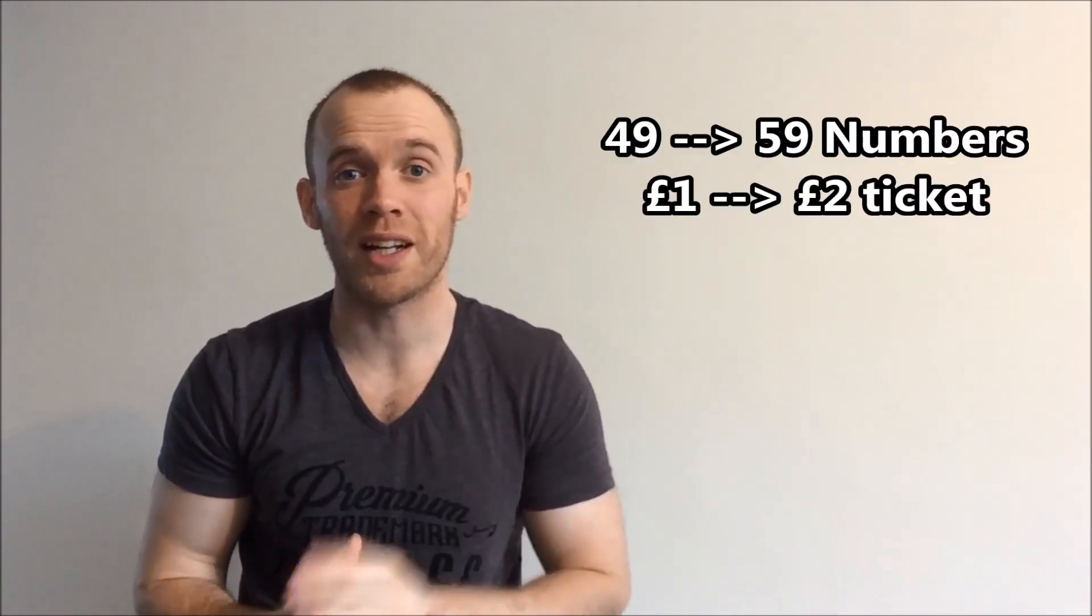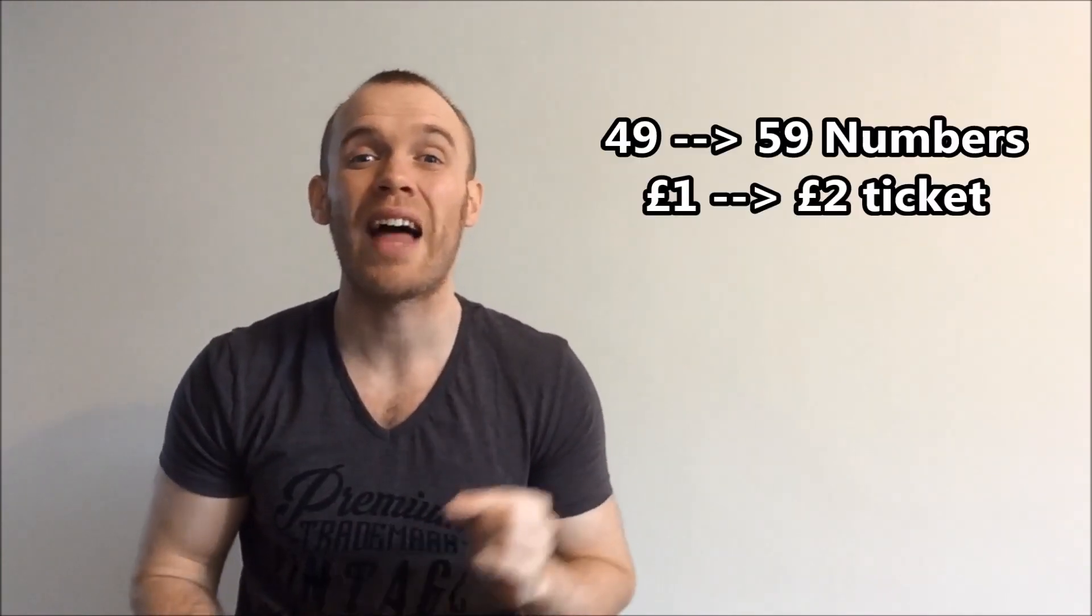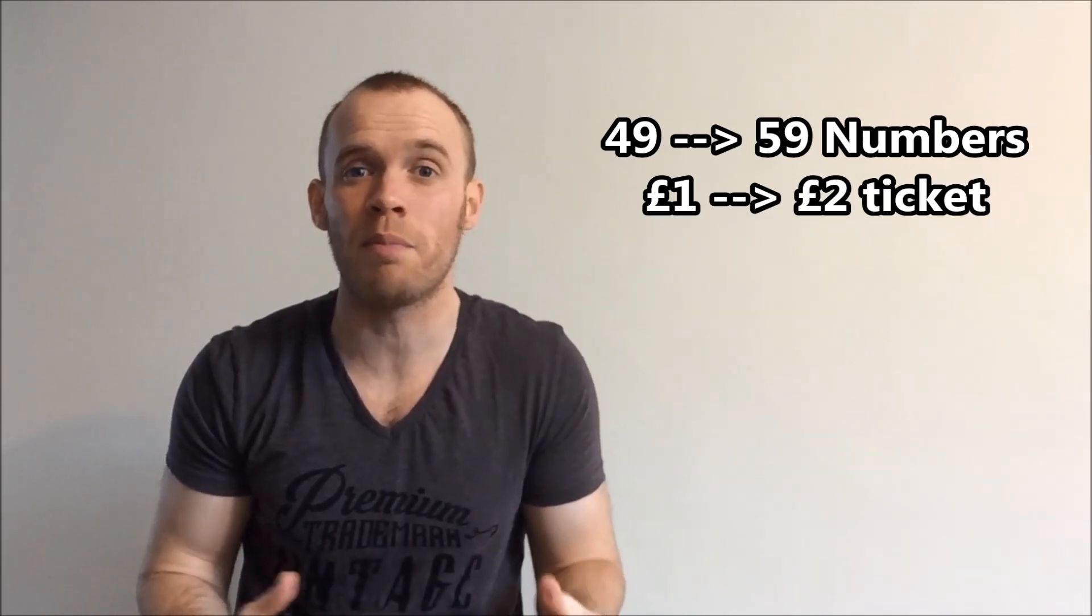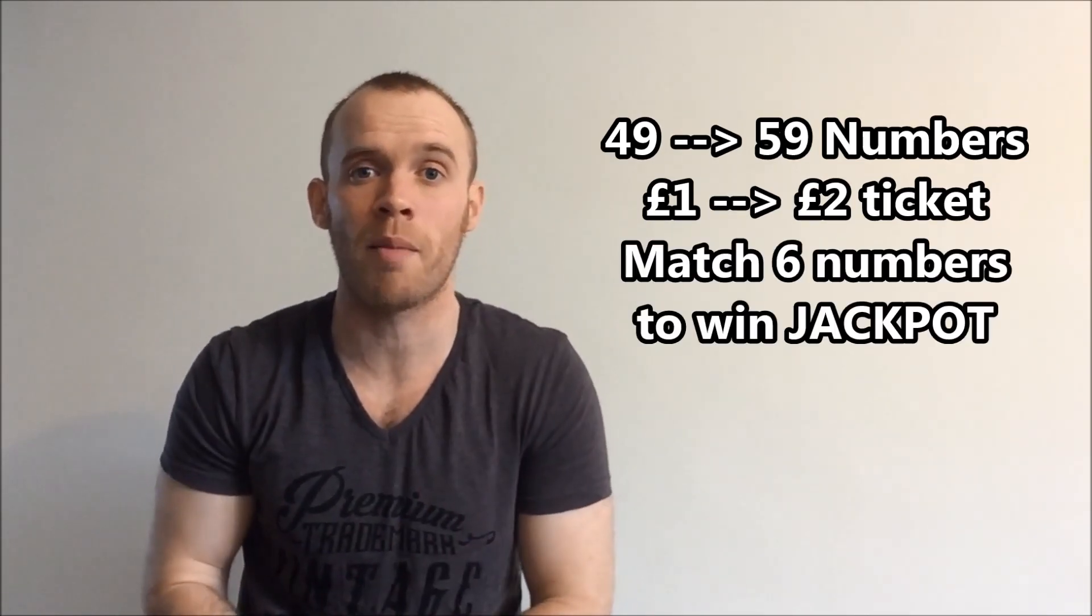From October 2015, they increased the selection from 49 numbers to 59 numbers and they doubled the price of a ticket. For a £2 ticket, you need to pick six numbers between 1 and 59. If all six come up, you win the jackpot.